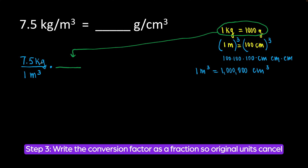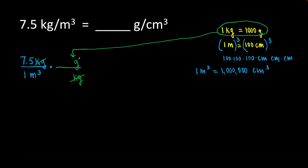Our kilograms cancel out and we are left with grams. I have kilograms on top in the numerator, so I will put kilograms on the bottom in the denominator and grams in the numerator. My kilograms cancel out and I'm left with grams. One kilogram is equal to 1,000 grams — all I did is plug in this conversion factor so that kilograms cancel out and I'm left with grams.